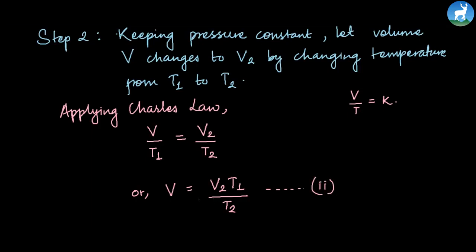Now we relate equations 1 and 2. From equation 1 and 2, we get: equation 1 gives V equals P1V1 divided by P2, and equation 2 gives V equals V2T1 divided by T2.